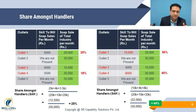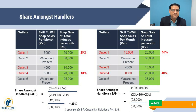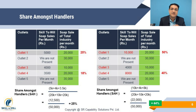Suppose at outlet number 1, where industry sales were 20,000, the industry sales increase to 40,000 while our sales remain at 10,000. Our share was increased in absolute terms but our Share Amongst Handlers percentage did not increase — it remained at 25%. So Share Amongst Handlers increasing does not simply mean more absolute sales; we need to increase our share within each particular counter.